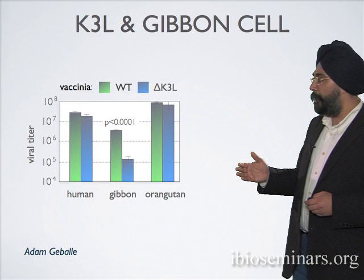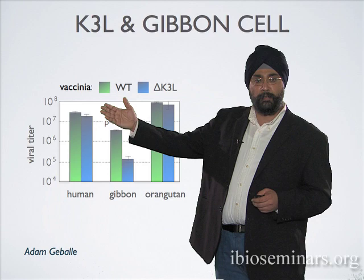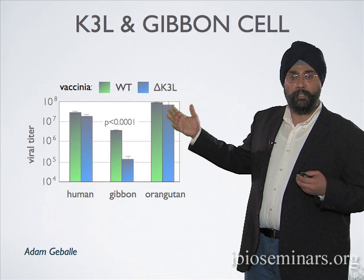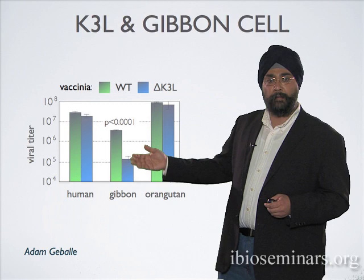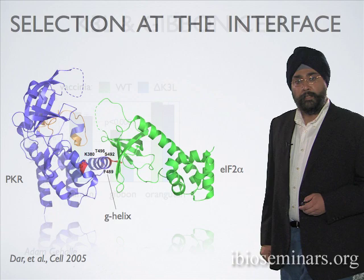We've done exactly the same types of assays in vaccinia-infected cells, taking human, gibbon, or orangutan cells and infecting them with either wild-type vaccinia or vaccinia with the K3L gene specifically deleted. In human and orangutan cells, it doesn't matter whether K3L was deleted — because these species have a PKR resistant to K3L antagonism. Whereas in the gibbon case, deleting K3L causes a tenfold drop in viral fitness, indicating that K3L from vaccinia is acting as a species-specific antagonist of the PKR response.